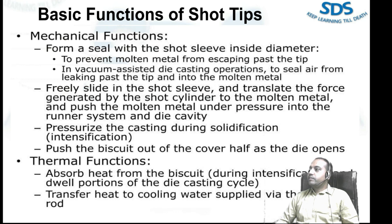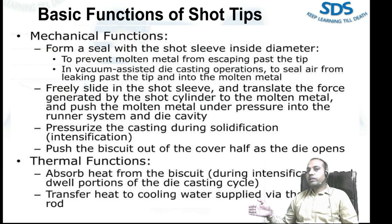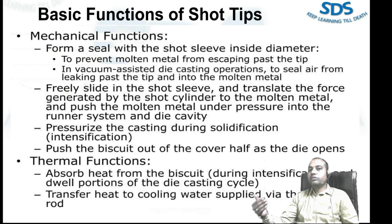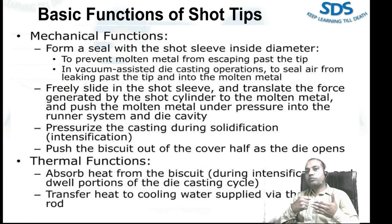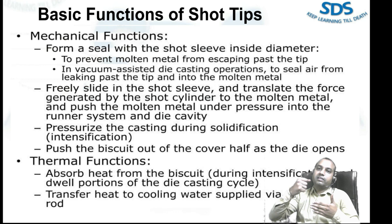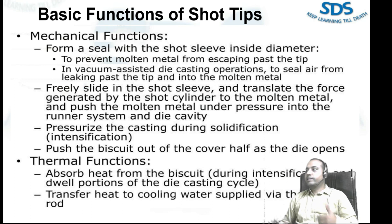It freely slides in the shot sleeve and translates the force generated by the shot cylinder to the molten metal, pushing the molten metal under pressure into the runner system and die cavity. When the intensification system applies pressure through the injection piston, the plunger pushes on the biscuit thickness, transferring metal pressure from the plunger to the biscuit, to the runner, and to the cavity.